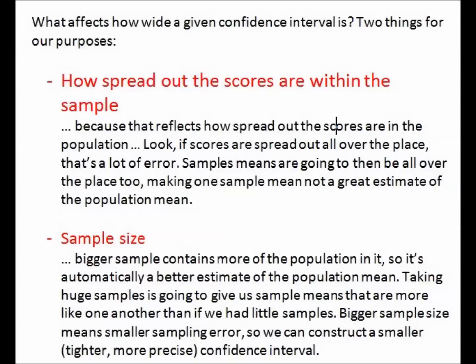Scores could range from the low 70s to the high 90s and still average 78, but I'd end up with a really wide confidence interval — and that wouldn't be reassuring when I need the water to be exactly 78 degrees. The width is affected by how spread out the scores are within each sample.